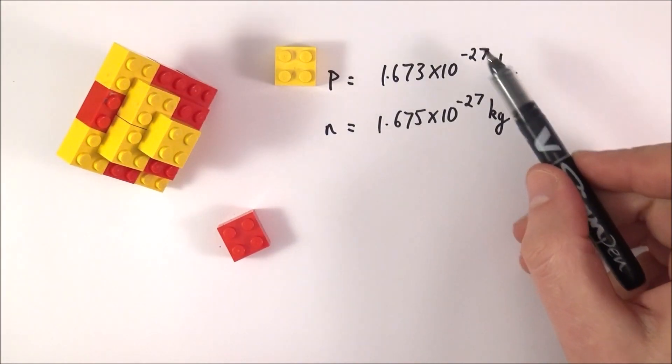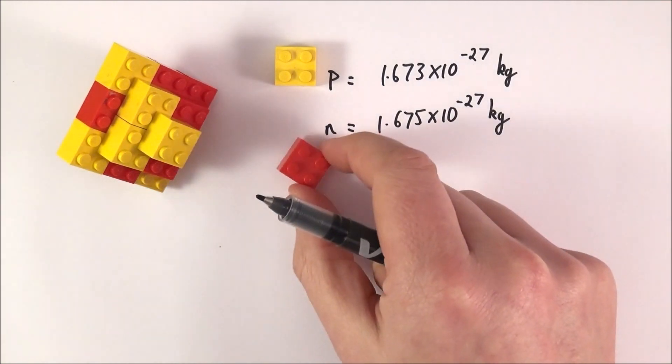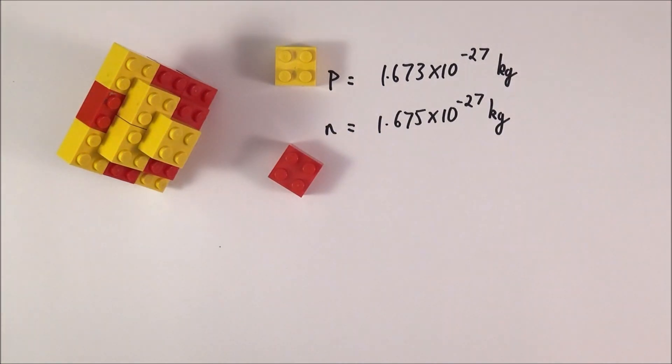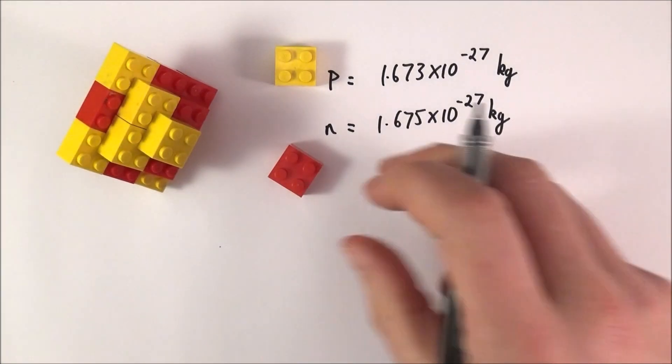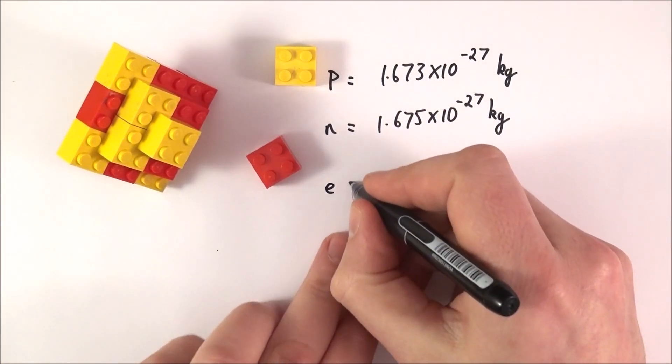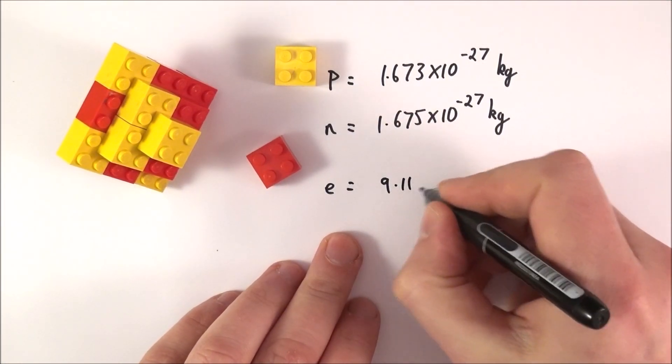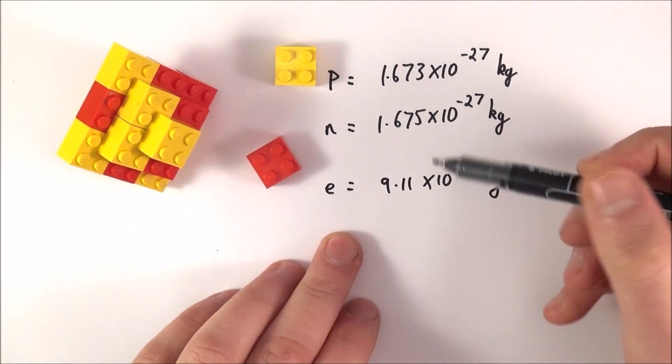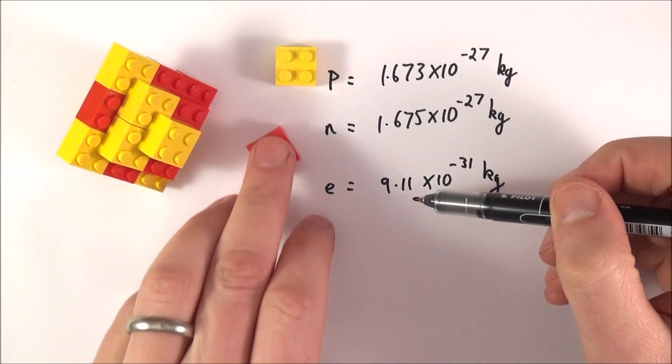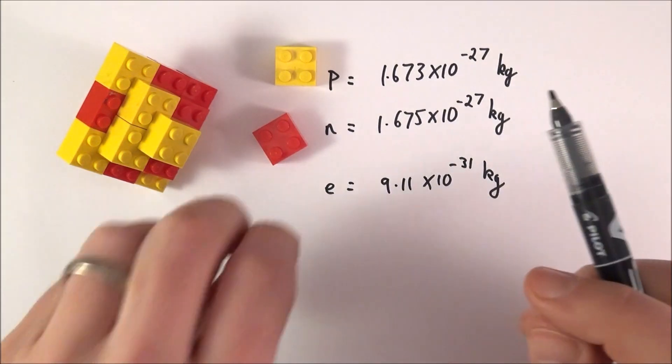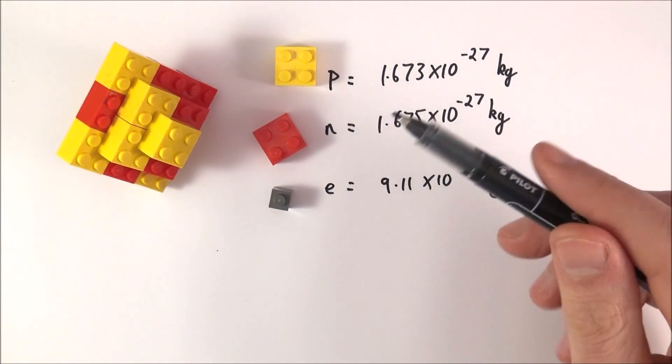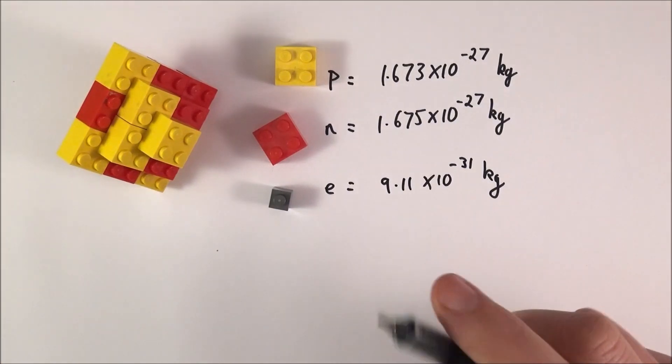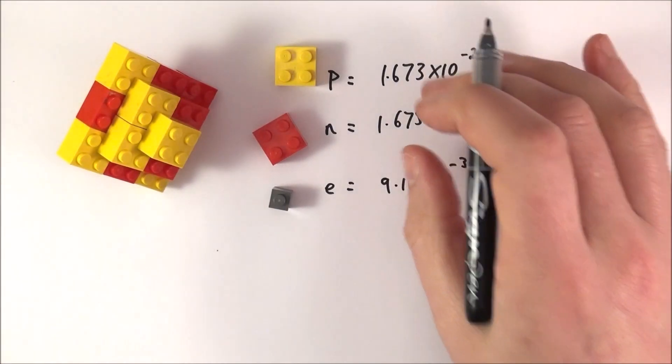A neutron is slightly heavier. We also have the electron, and the mass of one of these is 9.11 times 10 to the minus 31 kilograms, which means it's about 2,000 times less massive. However, these are the rest masses of these particles inside. Rather than writing it like this, we can actually shorten it to something called the atomic mass unit.